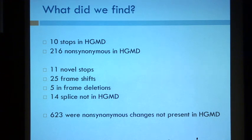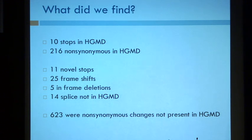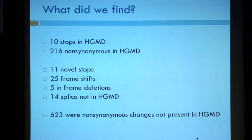What did we find in ClinSeq? The Bell paper suggested you'll get about three variants per individual for rare recessive childhood disorders. Looking at 78 genes in our 572 individuals, we got 10 stops in HGMD and 260 non-synonymous variants, plus novel stops, frameshifts, in-frame deletions, and splice sites not in HGMD. We also have 623 non-synonymous changes not yet fully annotated. In CFTR we found Delta F508 in seven individuals. Because we have a high proportion of Ashkenazi Jewish individuals, we also have Ashkenazi Jewish founder mutations for rare diseases appearing in our dataset.